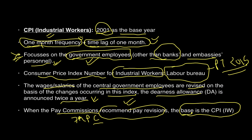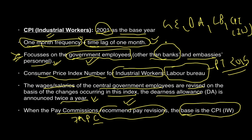Pay commission recommendations are also based on CPI-IW. So remember: government employees' Dearness Allowance and pay commission recommendations are linked to CPI-IW, which is calculated by the Labour Bureau. UPSC frequently asks which ministry or organization calculates which index, so remember this.